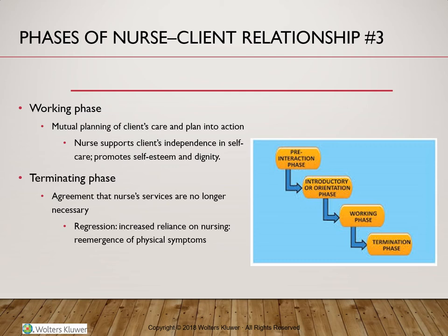Once the working phase is done, the terminating phase begins. Both the nurse and the client mutually agree that the client's immediate health problems have improved and nursing services are no longer necessary. If regression occurs — such as increased reliance on nursing assistance or re-emergence of symptoms — the nurse must first rule out healthcare-related complications. Then, with compassionate care, the nurse facilitates the client's transition to independent living or transfer to other healthcare services.